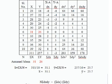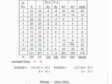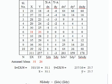Now square the dy values: (−8)²=64, (−4)²=16, (−3)²=9, (−2)²=4, (−1)²=1, 0²=0, 0²=0, 2²=4, 3²=9, 4²=16, and 6²=36. Adding all dy² values gives sigma dy² = 159.